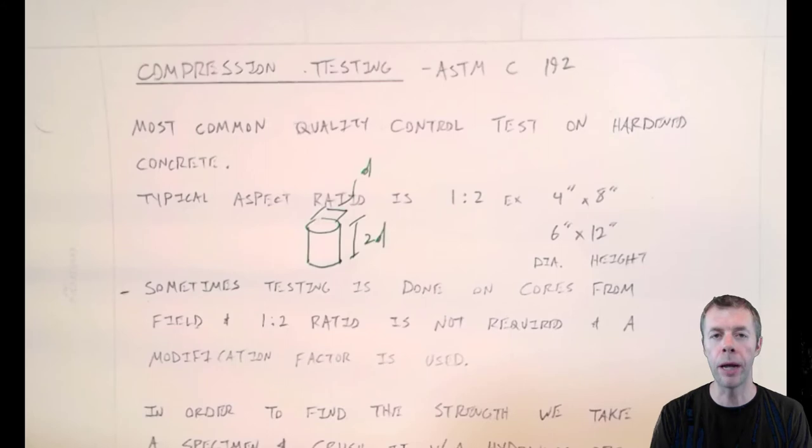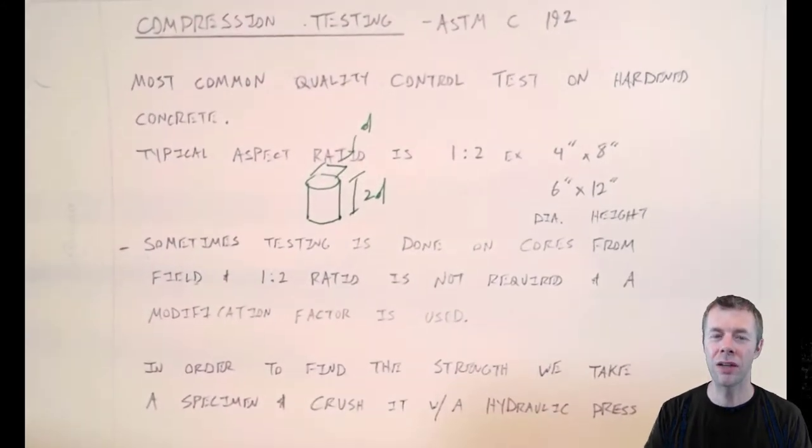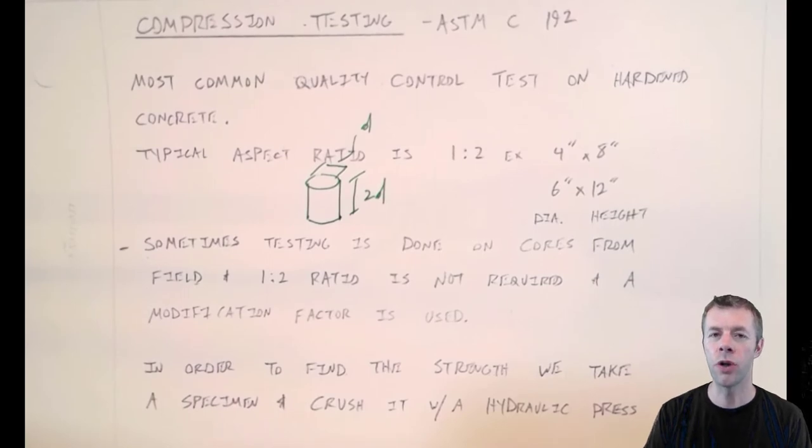But you don't have to do it that way. You can also take cores from a structure. That's usually last resort because you really don't want to punch holes in a structure. It's much easier just to make the concrete cylinders as you're making the concrete structure. But sometimes that can happen.